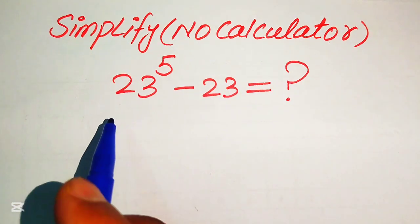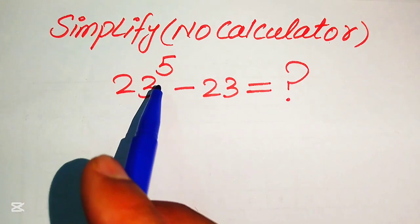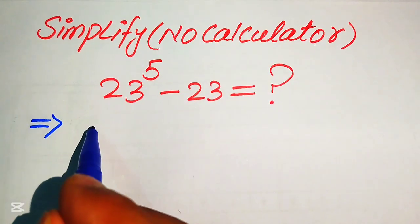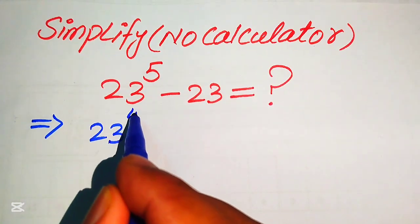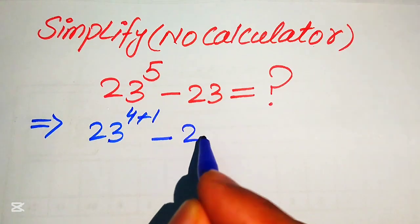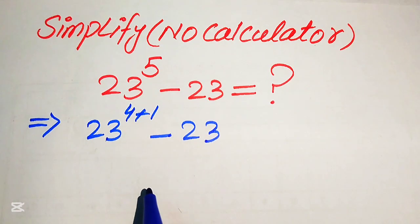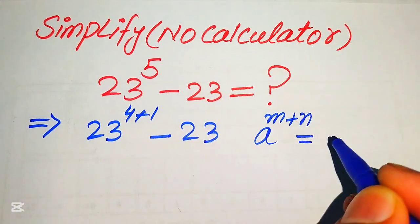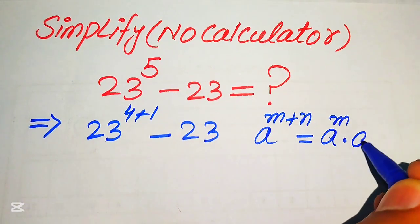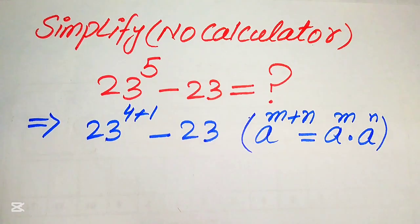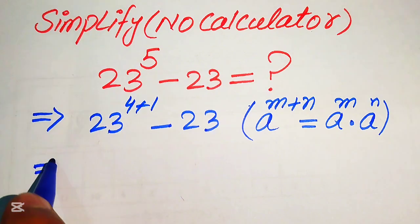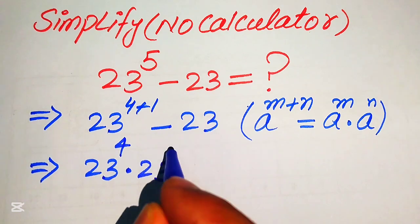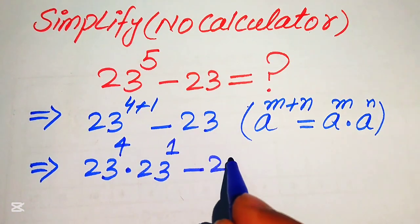First we need to focus on the exponent of this term, and the exponent is 5, so we will rewrite this algebraic expression as 23 to the power of 5 — we write 5 as 4 plus 1 — minus 23. After that we apply the exponent law: a to the power of m plus n equals a to the power of m multiplied by a to the power of n. According to this law we break the exponent and write it as 23 to the power of 4 multiplied by 23 to the power of 1, minus 23.